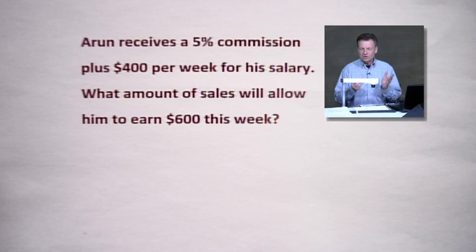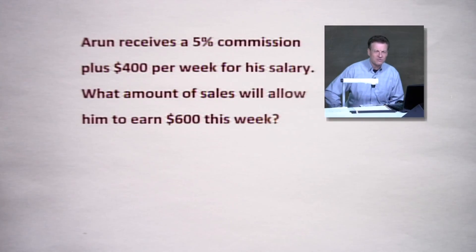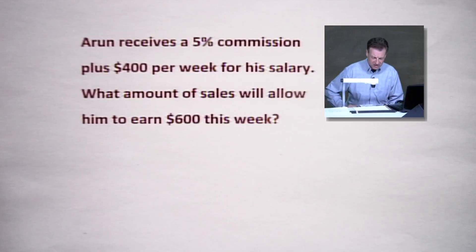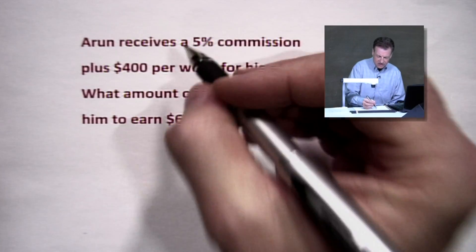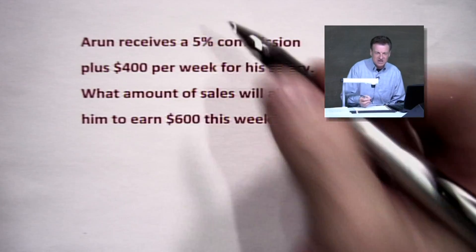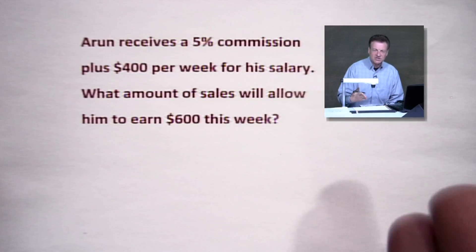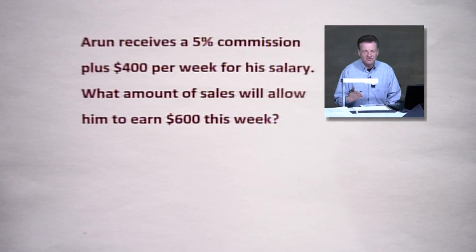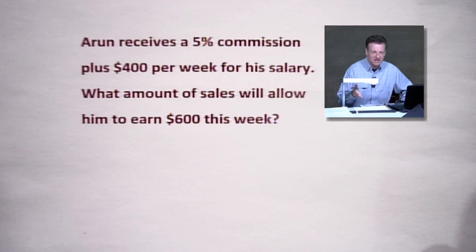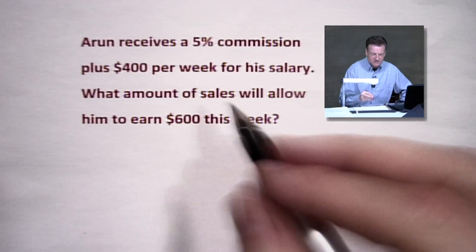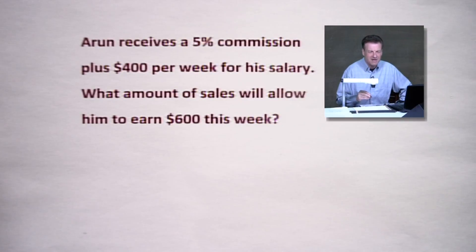This is very similar to the problem we had yesterday. For those of you who tuned in yesterday and saw us work through the math line thing — this is a slope-intercept moment. This 5% is the slope; it's the rate of change. He gets 5% for every dollar he sells, for every sale he makes. That's what commission is all about.